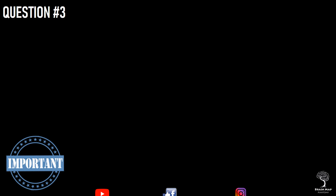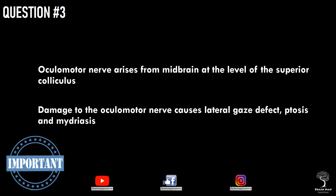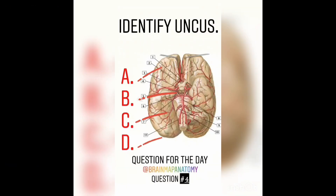Take home message: the oculomotor nerve arises from the midbrain at the level of the superior colliculus. Damage to the oculomotor nerve causes lateral gaze defect, ptosis, and mydriasis. Question 4.